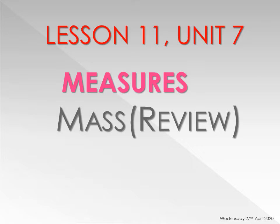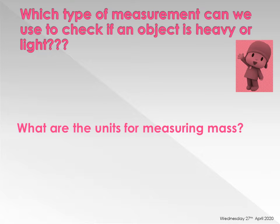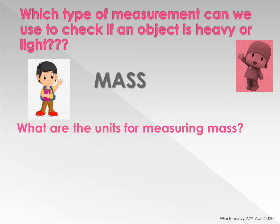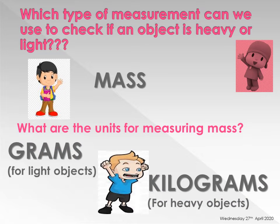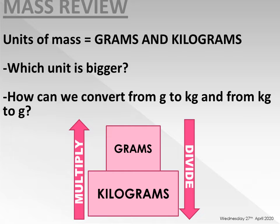Today let us look at another topic in lesson 11 - mass. Let us do this quick exercise: which measurements do we use to check for heavy or light? The measurement we use to check heavy or light is mass. What about the units for mass? Units for mass are grams for light objects and kilograms for heavy objects.